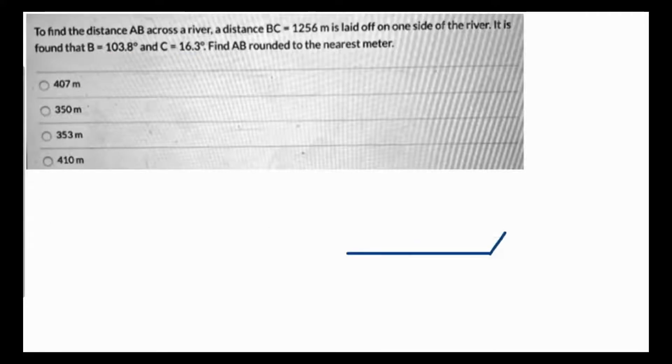It's a triangle we are talking about. We have to find the distance AB across a river, and angle B is obtuse. So this is B and this is C. BC is 1256 meters which has been laid off.